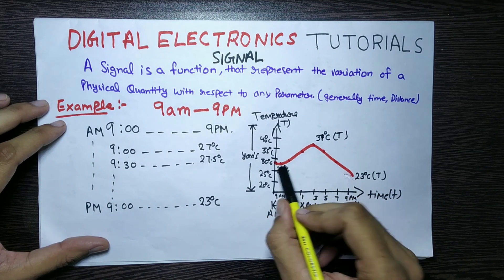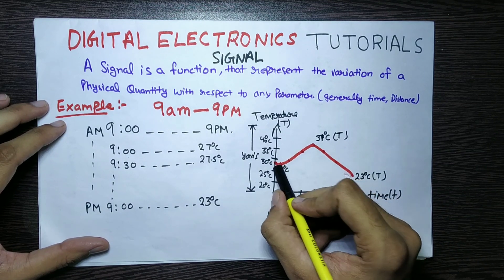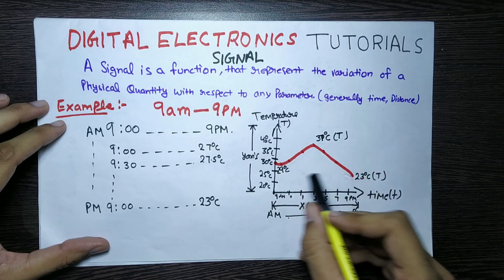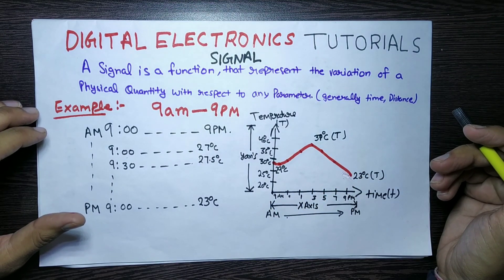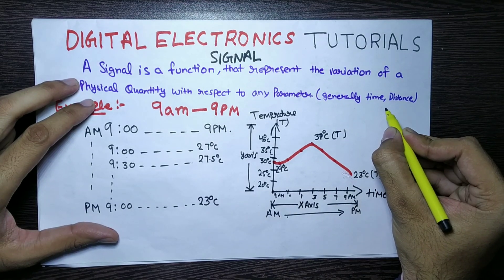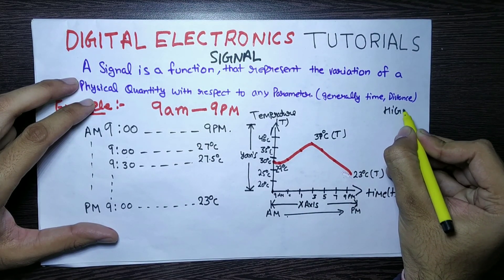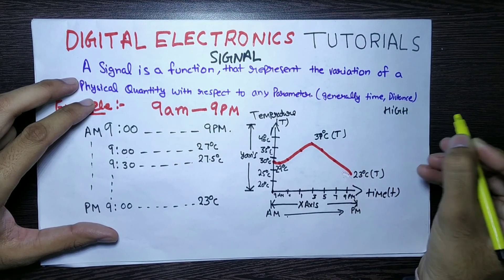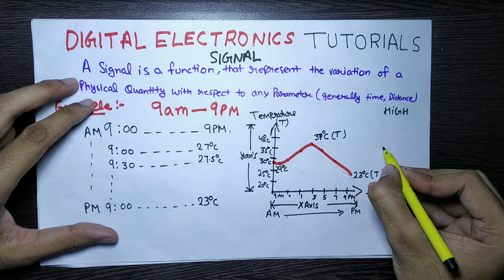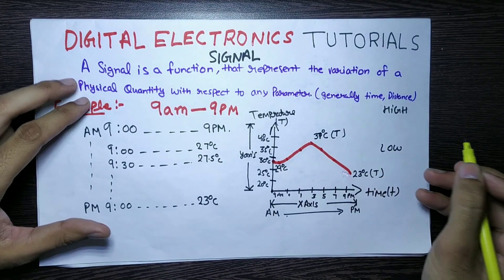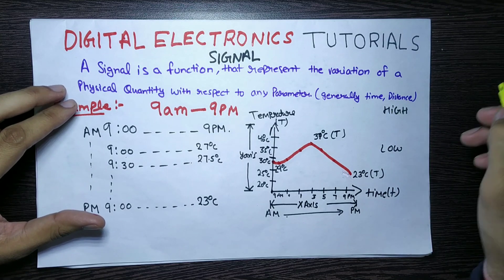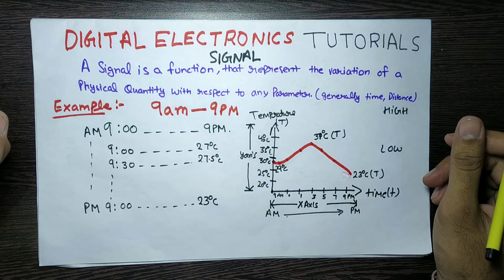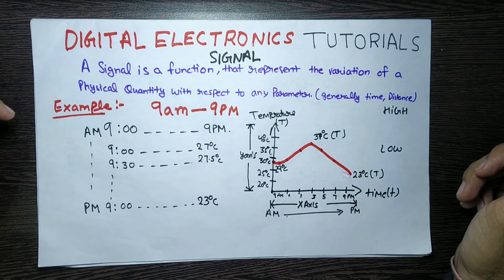In this graph you can see the line goes up and down — this is our signal. A signal is always going up or down; sometimes it will be on a high range, sometimes on a low range. Signals go from high to low or low to high. That's it for today's video. In the next video, we will see how an electrical signal works.